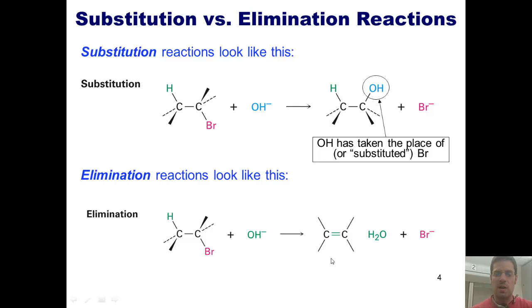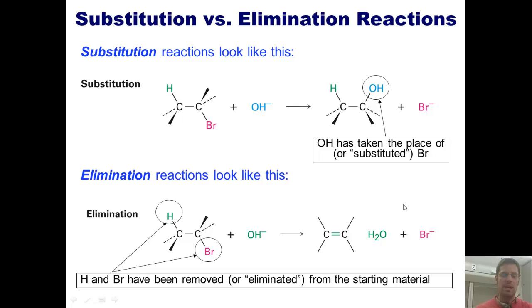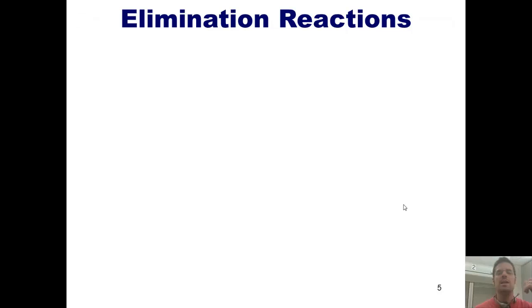You'll notice, though, that in comparing the product alkene to the starting material that has this bromine, the product lacks the hydrogen and the bromine atoms that were present in the starting material. Thus we could say that the hydrogen and the bromine have been removed or eliminated from the starting material going from left to right. And that's why we call this an elimination reaction.